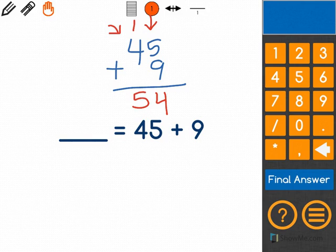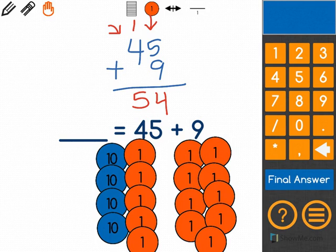My answer is 54 and I can check this using a picture. Here's 45 plus 9 using a picture. First I'll count the 1's.